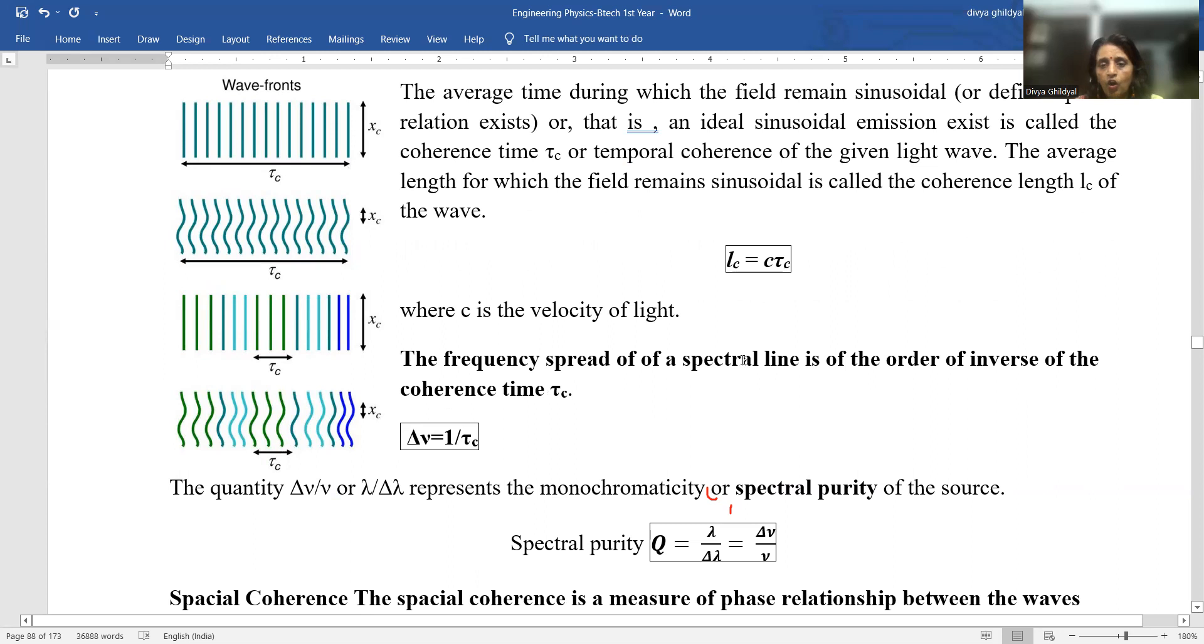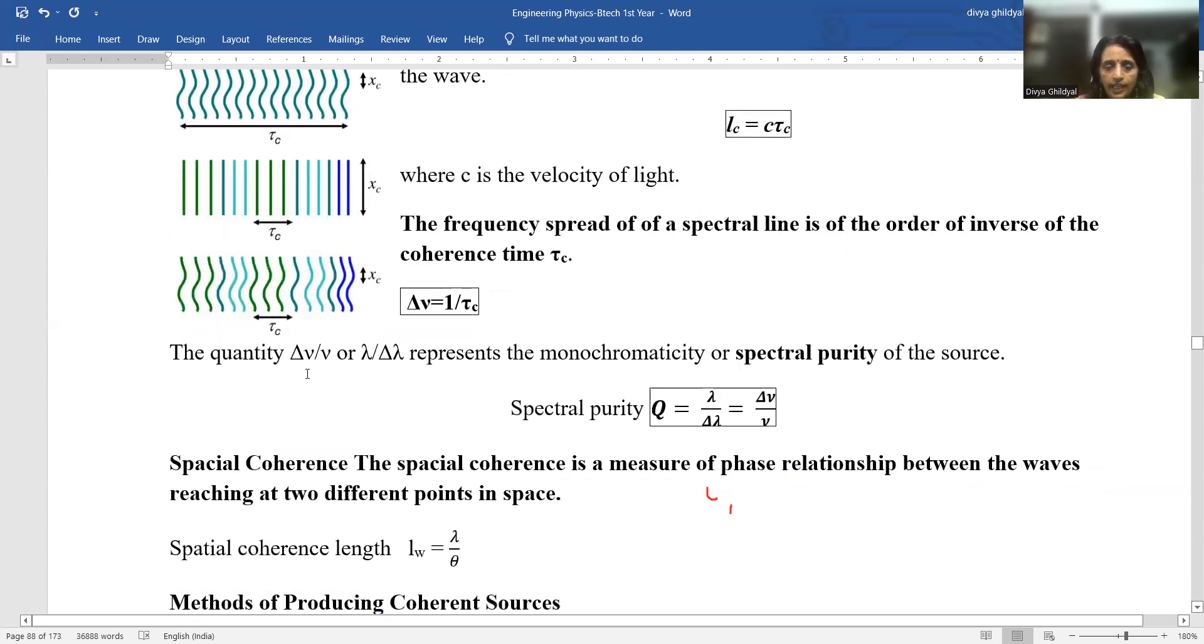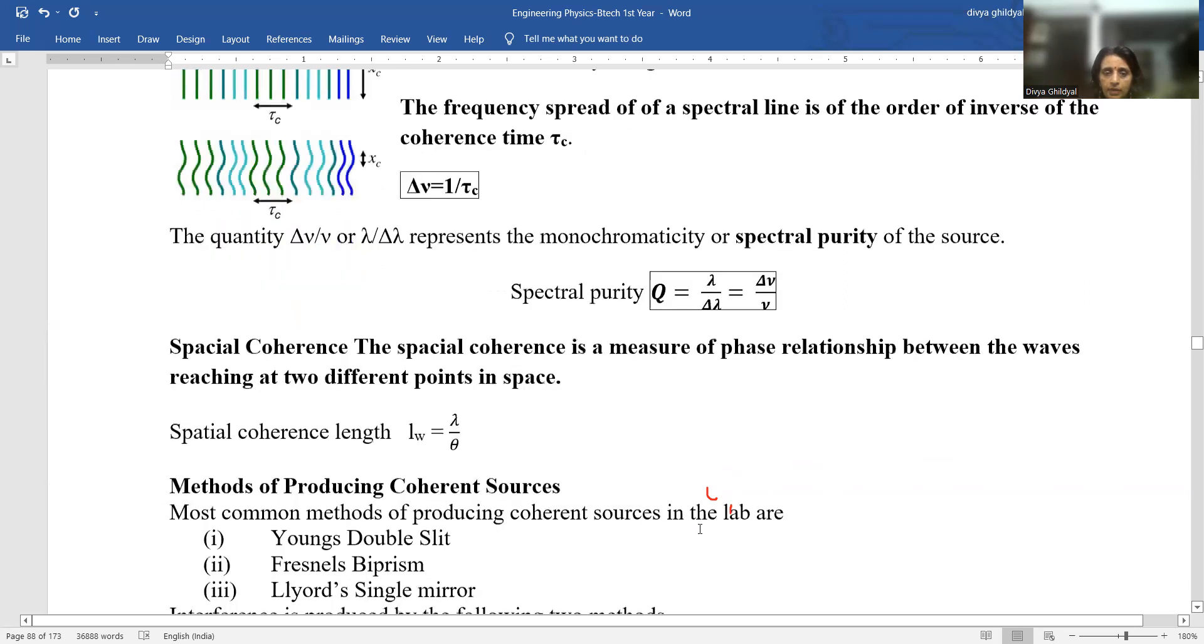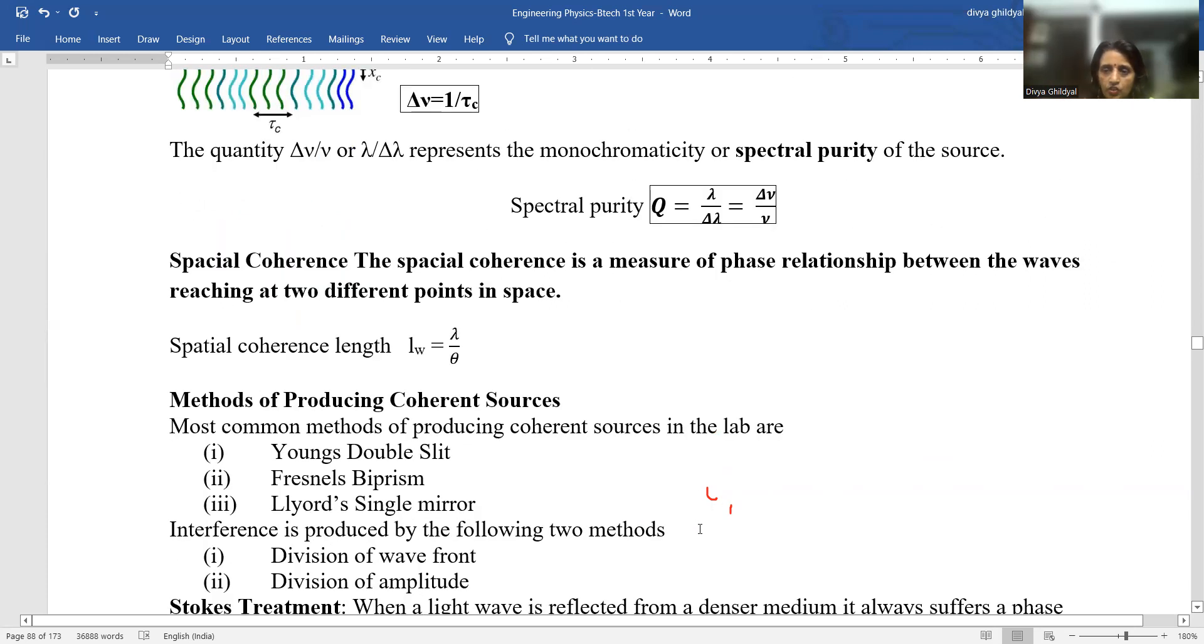And frequency is one upon time. So the frequency spread of a spectral line is the order of inverse of coherent time tau C. The quantity del mu by mu or lambda by del lambda represents the monochromaticity or spectral purity of the source. Monochromatic, that means single wavelength source. So spectral purity Q is equal to lambda upon del lambda or del mu by mu. Spatial coherence is a measure of the phase relationship between the waves reaching at two different points in space.